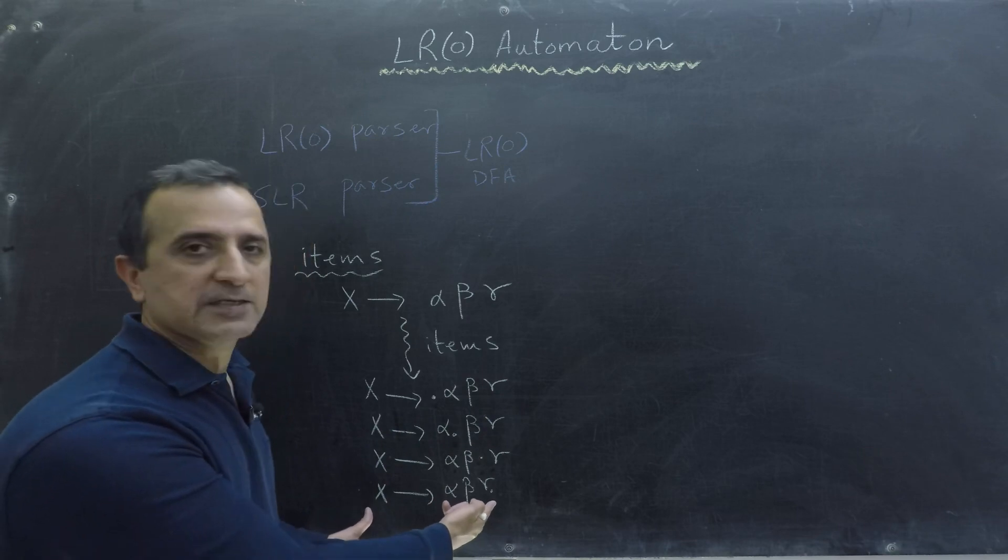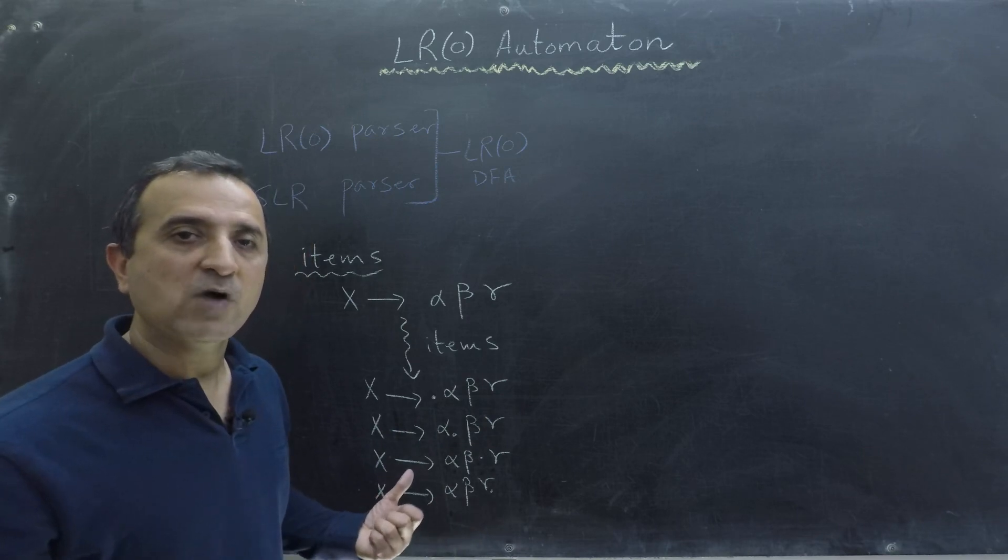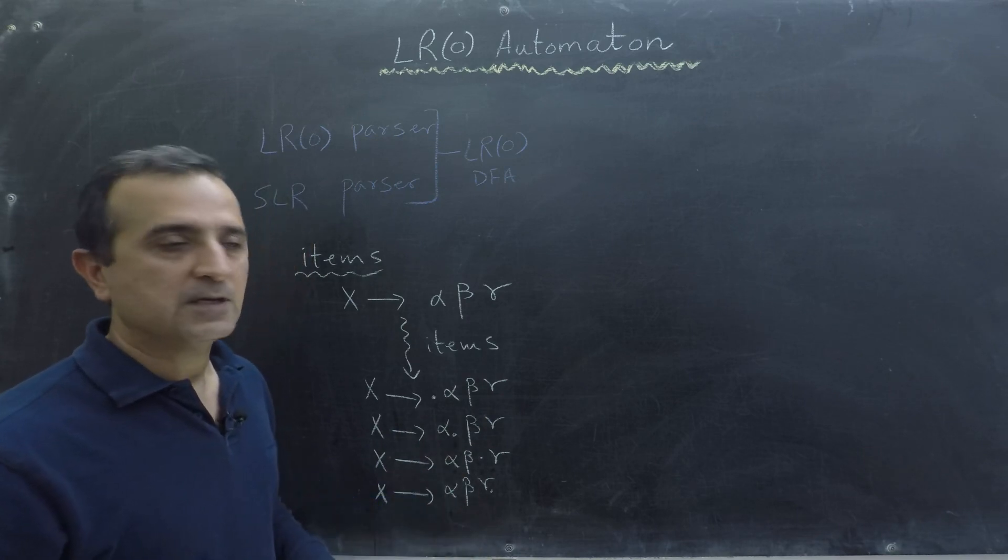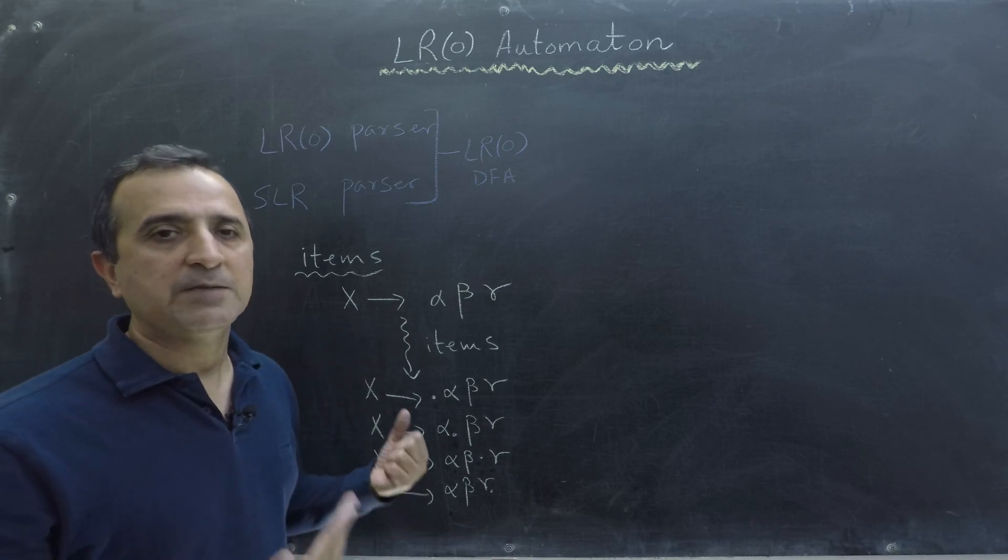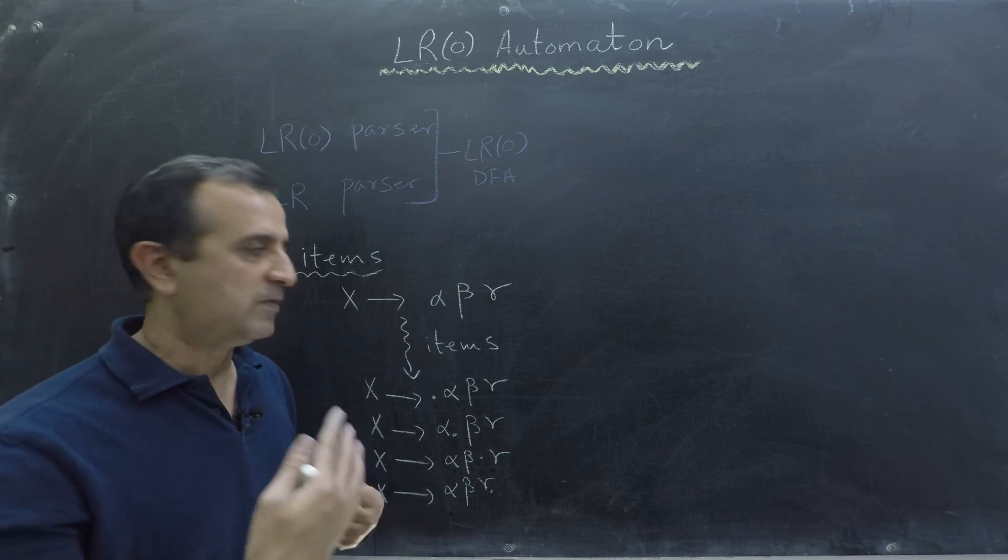So we have seen this whole production and we can now do our reduction. So this is the concept of our items. That item represents progress of our parser.